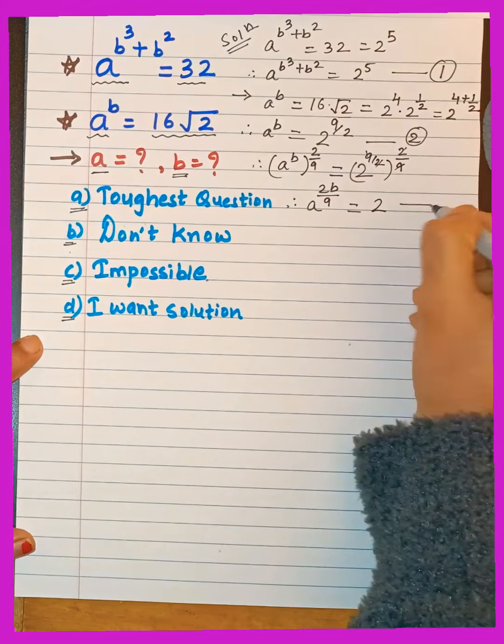Factoring by grouping: 3b(3b + 5) minus 2(3b + 5) equals 0, giving (3b minus 2)(3b plus 5) equals 0. This yields two equations: 3b minus 2 equals 0, so b equals 2/3; and 3b plus 5 equals 0, so b equals minus 5/3. We have two values for b.